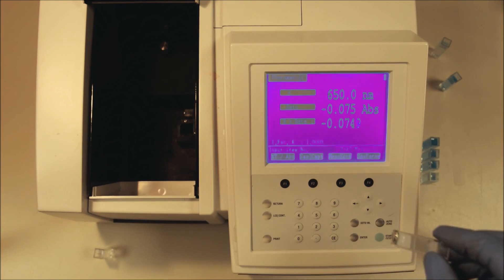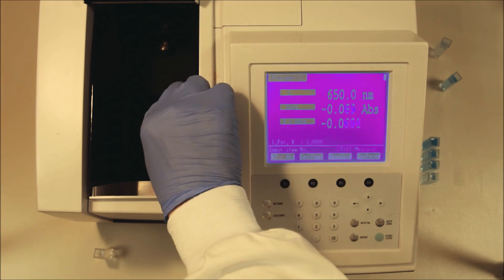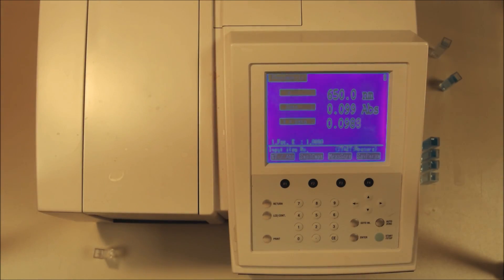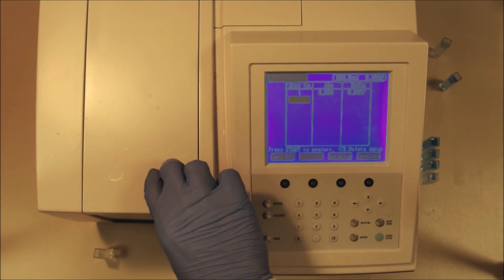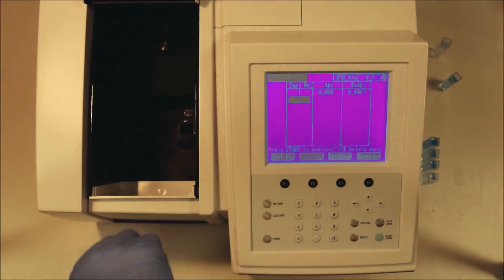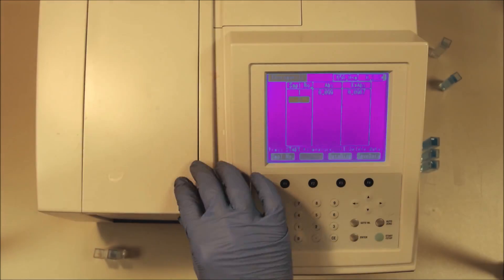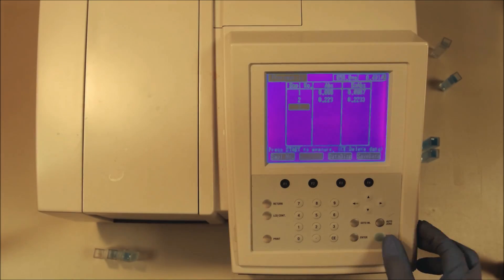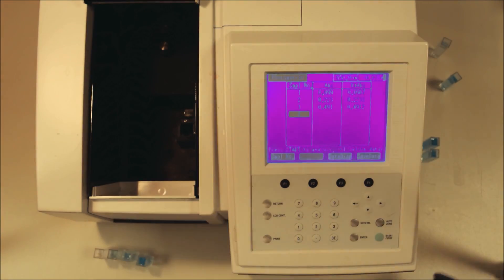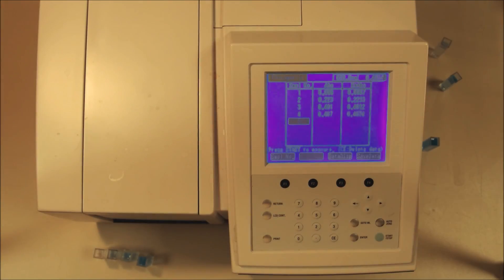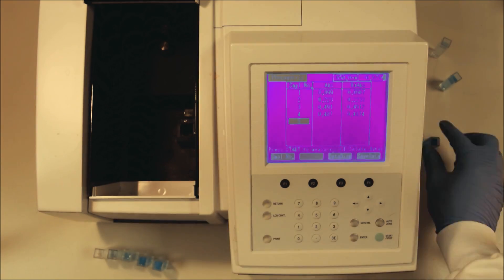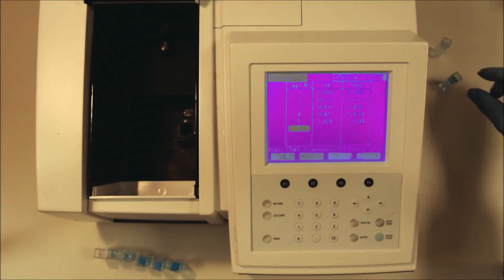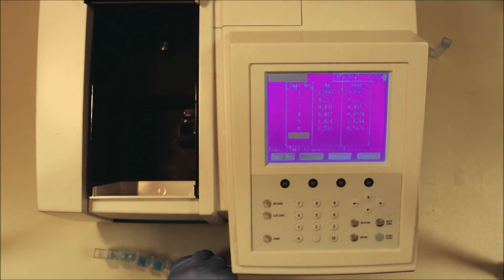Now we just take our samples in order, place them into the machine making sure to have the clear face pointing the right direction and then we push make measurement or in this case start stop. The machine will store the readings one at a time and we can make all our readings and then we're going to write those down. Once we've got all our measurements made we can take those and place them into a standard curve and then the last two samples which are the unknowns we can calculate the concentrations using our standard curve and the equation of our best fit line.